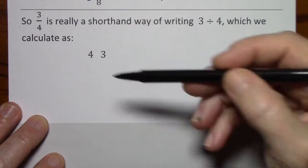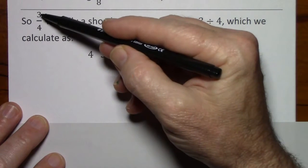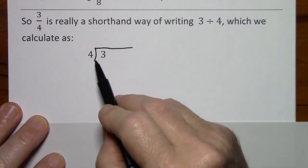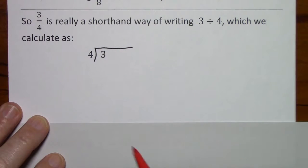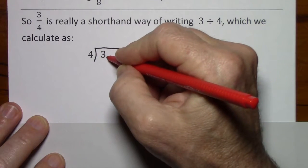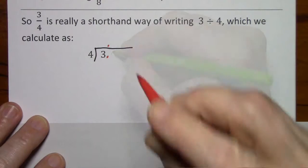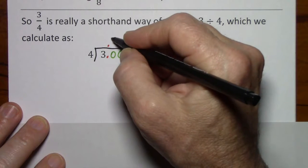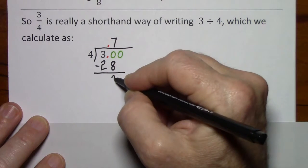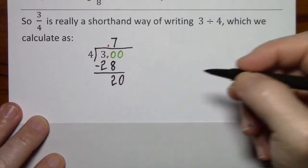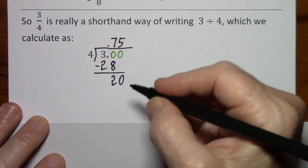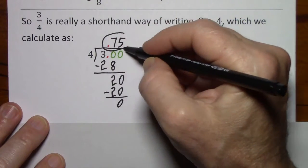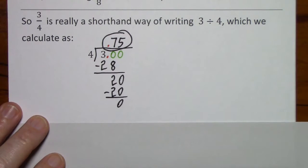To convert three-fourths to a decimal, it's really a shorthand way of writing three divided by four, which we calculate. Four doesn't fit, so we put the decimal point here and tell the world. Put in a couple zeros. Four goes into thirty seven times. Bring down a zero — four goes into twenty five times. So three-fourths can be written as the decimal seventy-five hundredths.